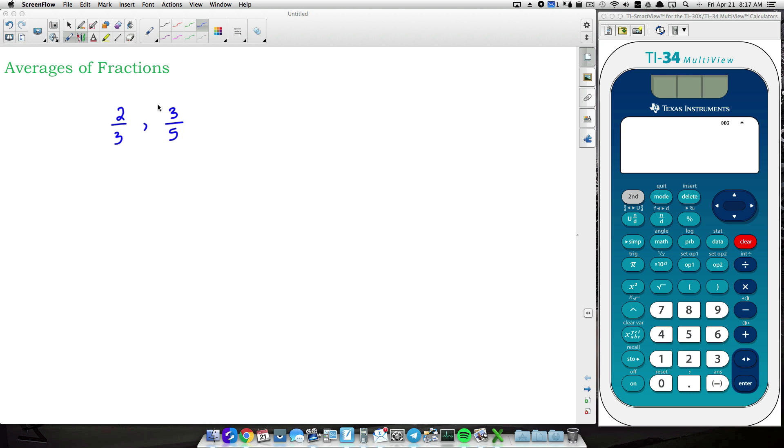And it works the same way as finding the average of, say, two integers. For example, if we take 4 plus 6, the average of 4 and 6 is going to be 5. Because if you take 4 plus 6, you get 10. Divide by 2, you get 5. Well, the same concept is going to apply to fractions as well.